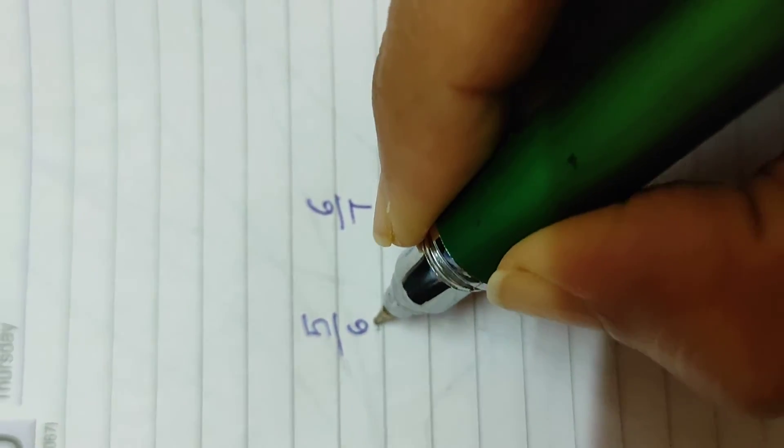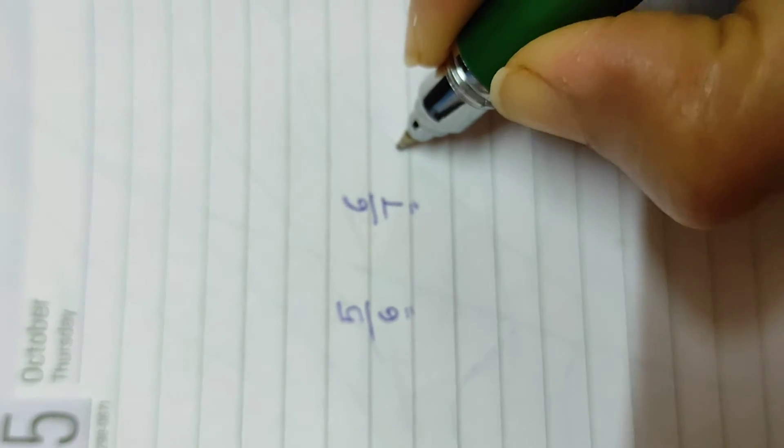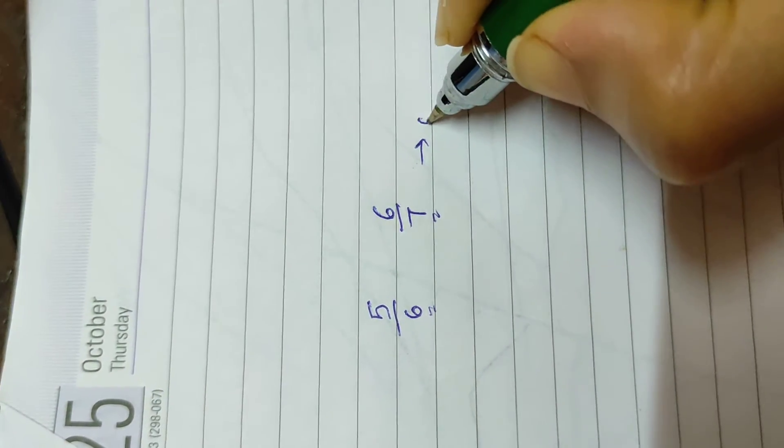And we want to know which one is bigger. Now these are called denominators.